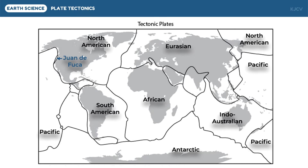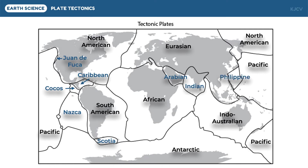For the secondary plates: The Juan de Fuca Plate is seated on the western side of the North American Plate. The Cocos Plate is on the northwestern portion of the South American Plate. The Caribbean Plate is in between the North and South American plates. The Nazca Plate is in between the Pacific and South American plates — this plate is debated as primary or secondary because of its size, showing the arbitrary classification of plates. The Scotia Plate is in between the South American and Antarctic plates. The Arabian Plate includes the Arabian Peninsula. The Indian Plate includes the Indian subcontinent. And lastly, in between the Eurasian and Pacific plates lies the Philippine Plate, since it borders the Philippine archipelago.